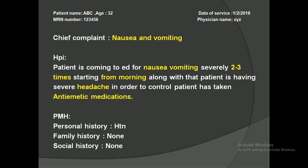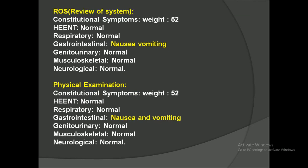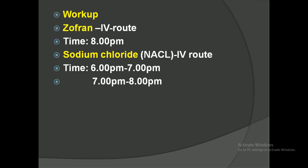Along with this, the patient is also having severe headaches. In order to control nausea and vomiting, the patient has taken anti-emetic medication — this completes the HPI. In past medical history, only hypertension is noted; remaining are nothing. In the review of systems and physical examination, nausea and vomiting in the gastrointestinal system is identified; remaining all are normal.